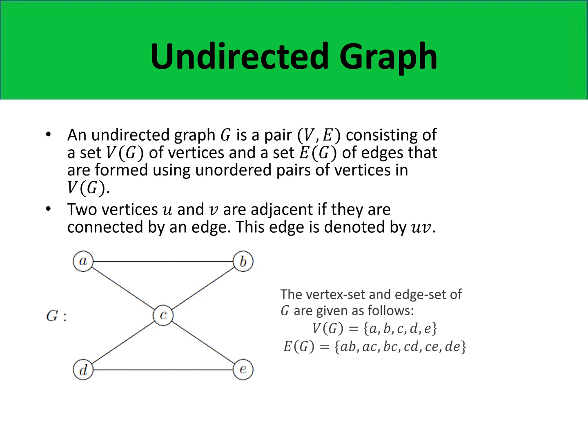An undirected graph G is a pair V, E consisting of a set V(G) of vertices and a set E(G) of edges that are formed using unordered pairs of vertices in V(G). We say that two vertices U and V are adjacent if they are connected by an edge. For example, if this is vertex U and this is vertex V, and they are connected by an edge, that means U and V are adjacent.